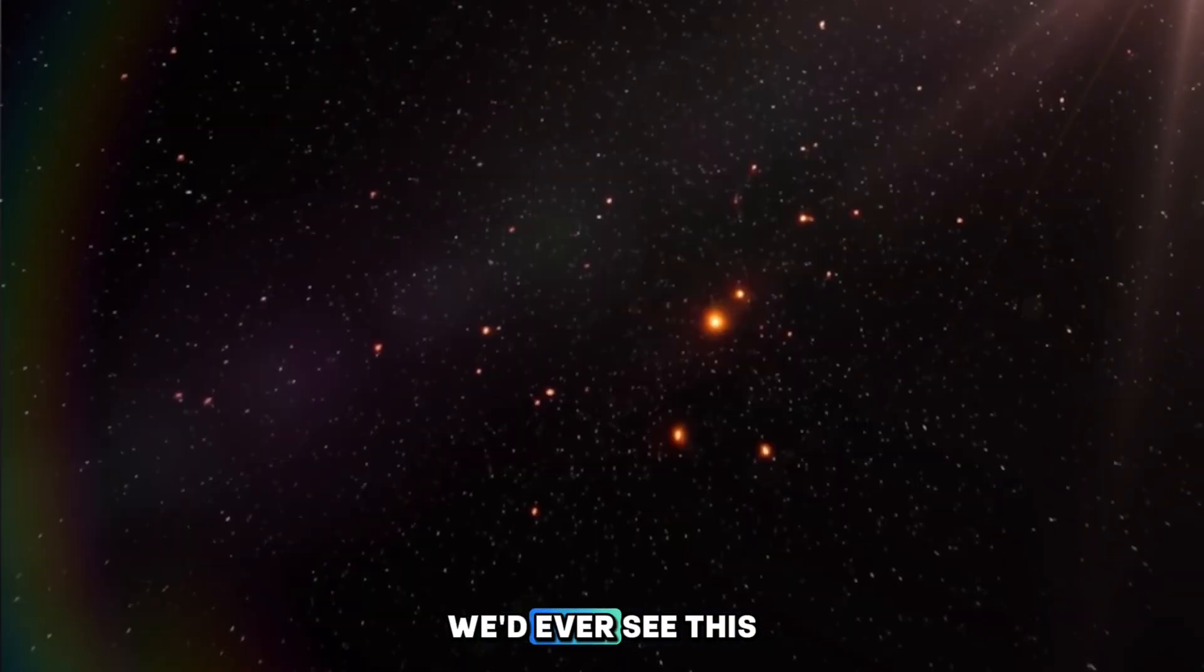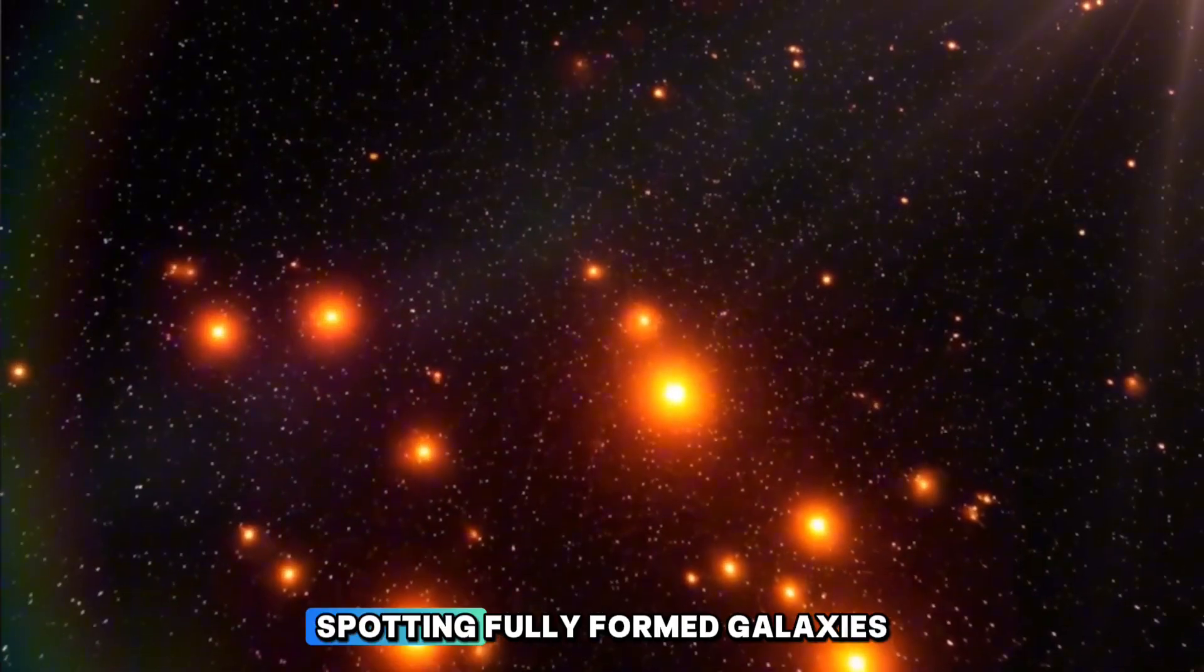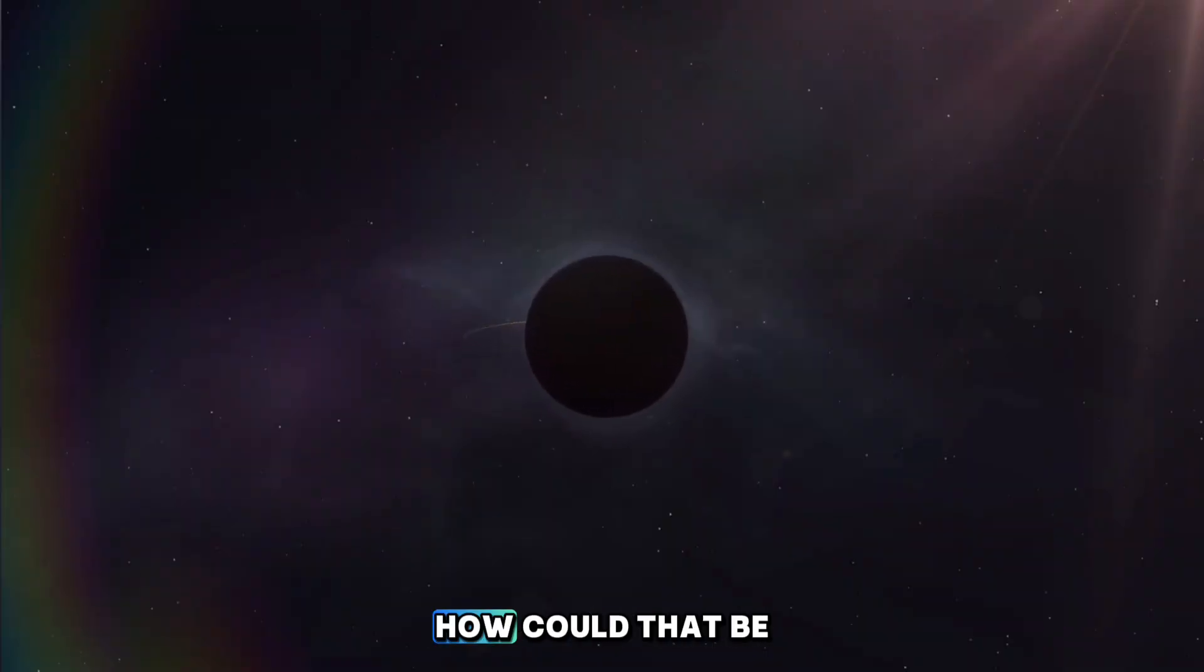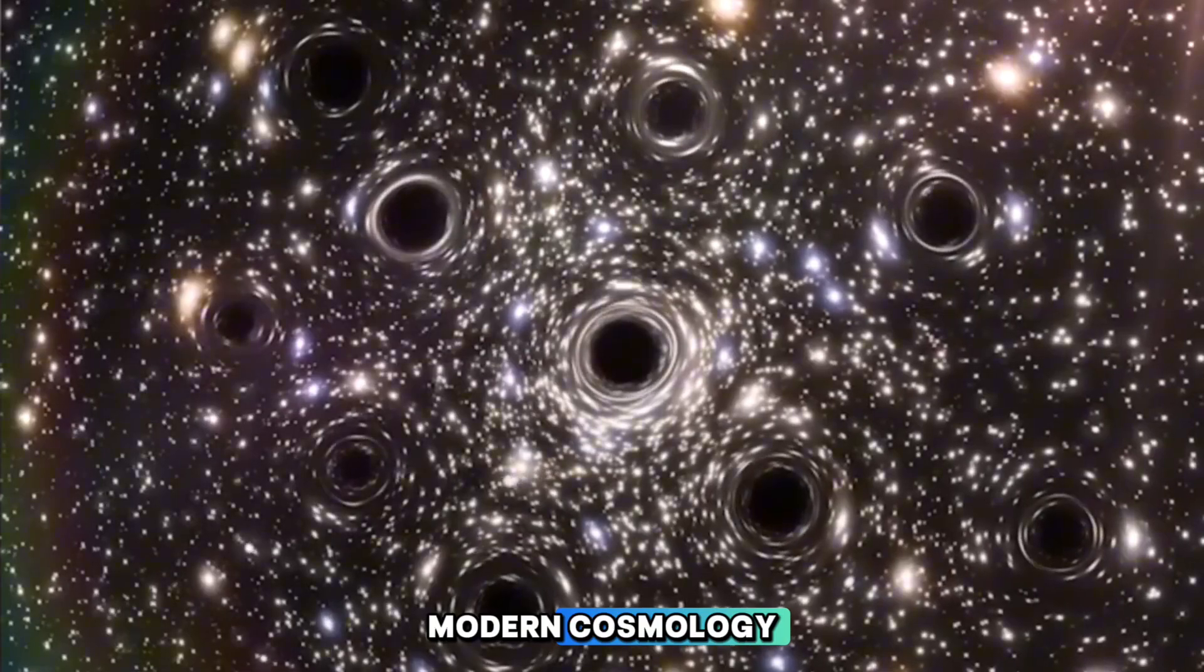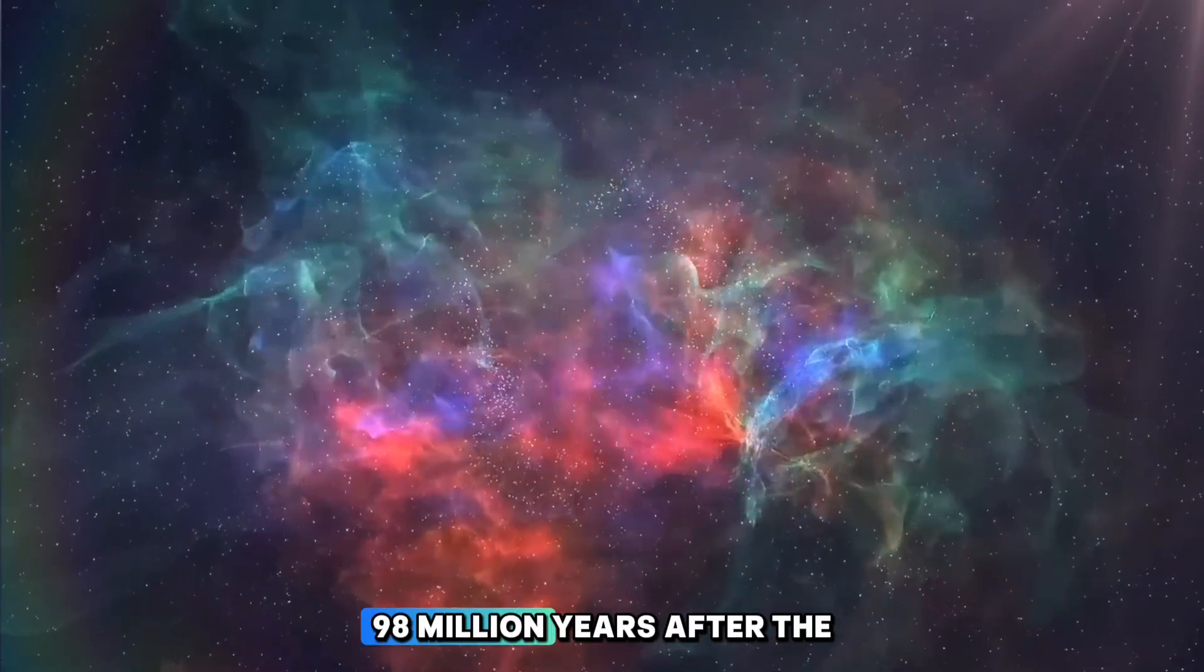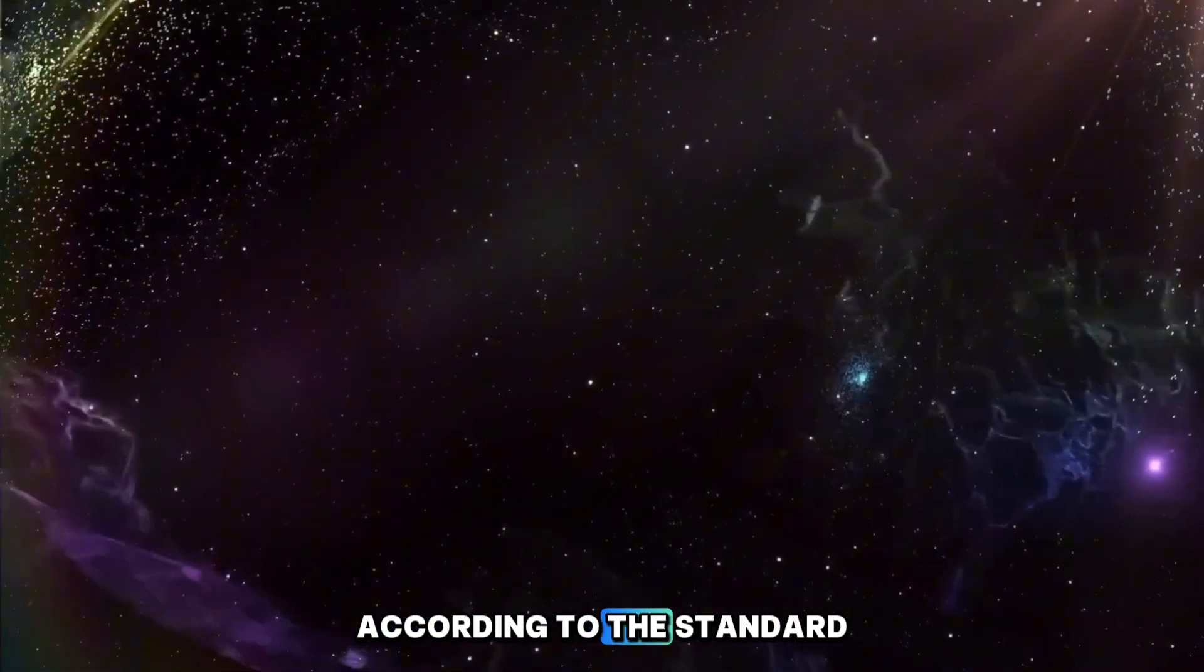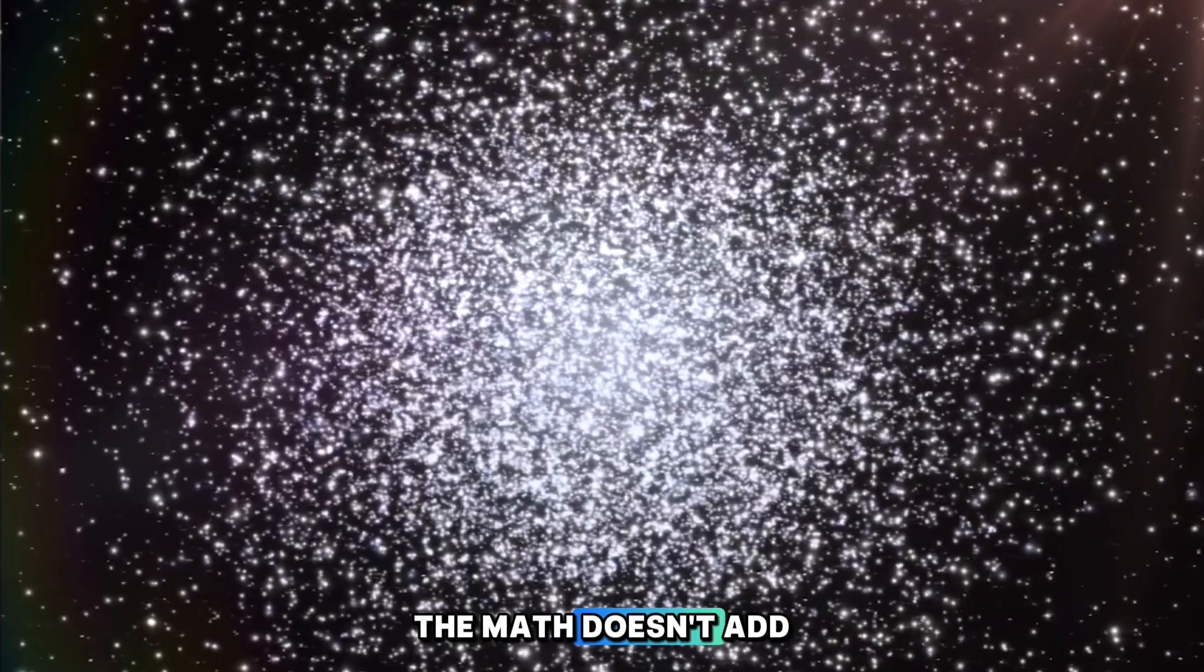No one expected that we'd ever see this stage. But then the James Webb Telescope came along and flipped the script completely. Because Webb has been spotting fully formed galaxies right inside this supposedly starless zone. And even beyond it. How could that be possible? That's not just a small error. It's a direct hit to the heart of modern cosmology. The latest shock came when Webb detected a galaxy sitting at an impossible redshift of 32. Meaning it existed just 98 million years after the Big Bang. That discovery shattered every timeline scientists believed in. According to the standard model, galaxies shouldn't even exist that soon after the beginning. The math doesn't add up. And that has every cosmologist scratching their head.